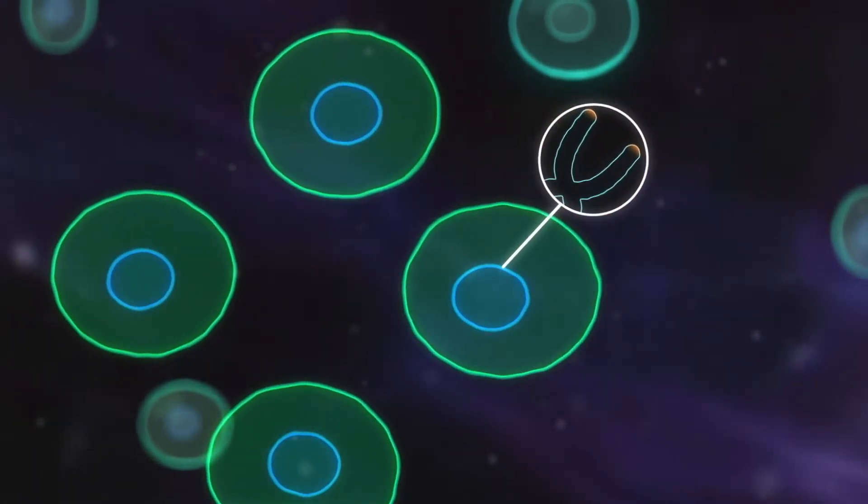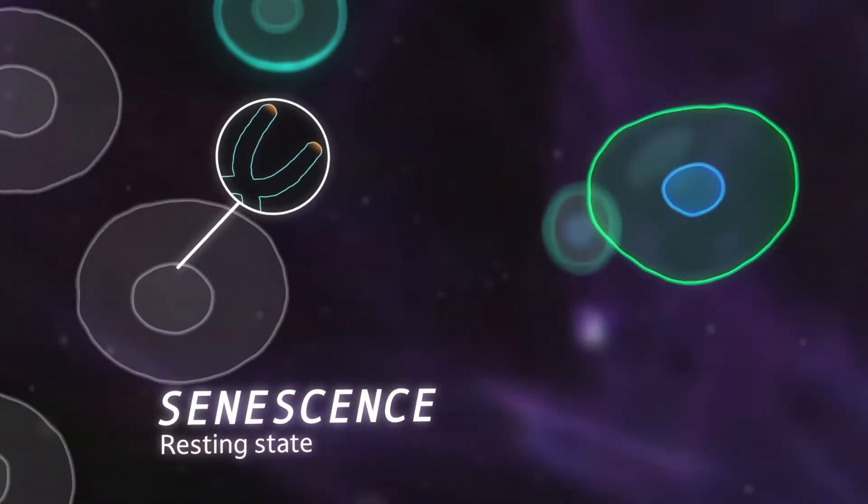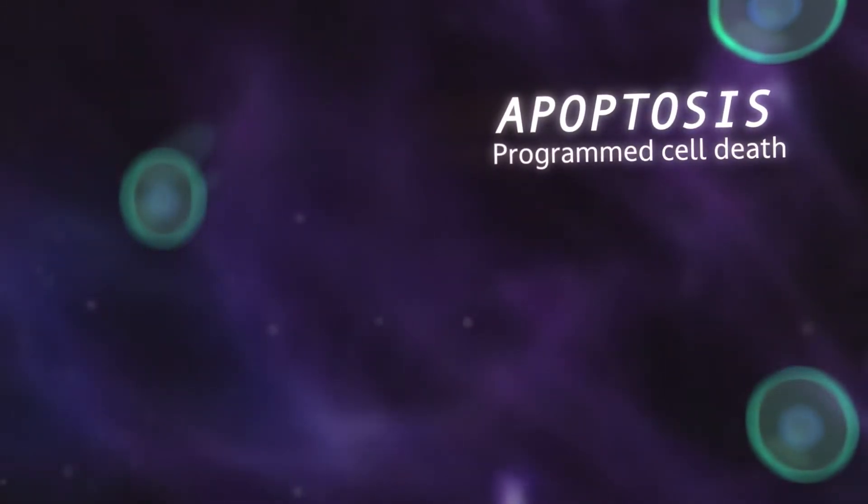That means the cell either becomes senescent, stops dividing and stays in place, or undergoes apoptosis when the cell is programmed to die, so it can be cleared away and replaced.